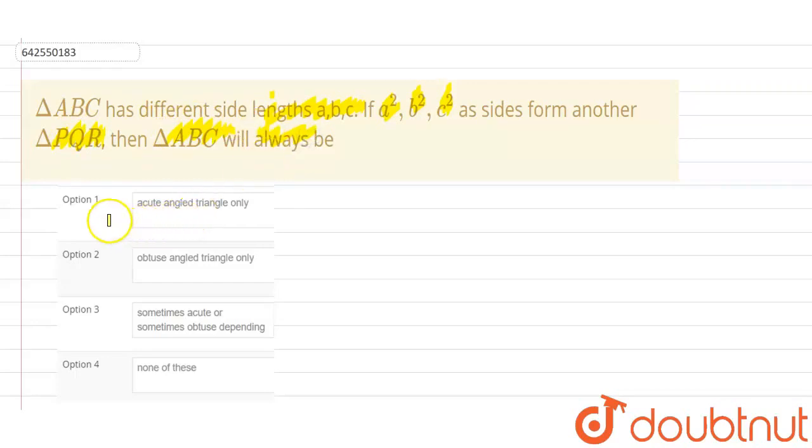We are given the options. Option 1 is acute angled triangle. Option 2 is obtuse angled triangle only. Option 3 is sometimes acute, sometimes obtuse depending. Option 4 is none of these.